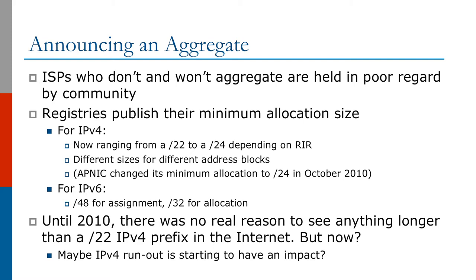Until 2010 there really wasn't any reason to see anything longer than a slash 22 IPv4 prefix on the internet. But now it's quite likely that the IPv4 runout is having a serious impact on the internet routing table and is determining what ISPs are announcing to the global internet.